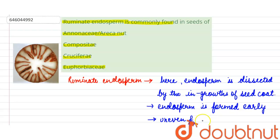Uneven and enlarged surface, which we can see in this image. This is the example of a ruminate endosperm.